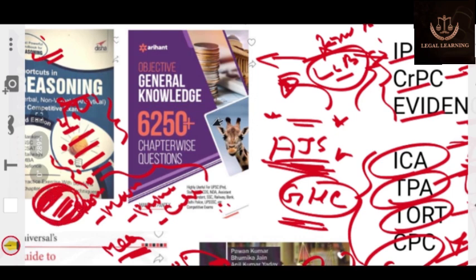Then Arihant's Objective General Knowledge, you can go through this book. It is also nice. Lucent's Objective and Lucent's books are also good. Lucent's Verbal Reasoning is also good you can go through. But if you go through the least amount of books, then it's better according to me.